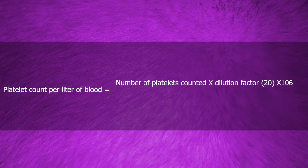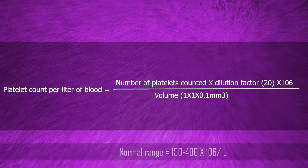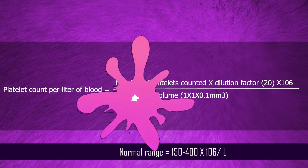When calculating the platelet count per liter of blood: number of platelets counted multiplied by the dilution factor, divided by the volume. The normal range equals 150 to 400 × 10⁹ per liter.